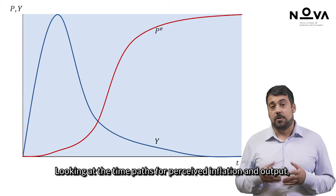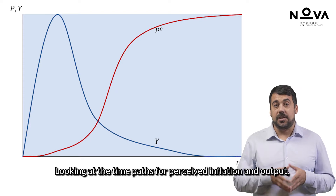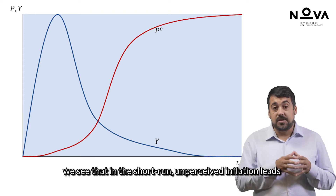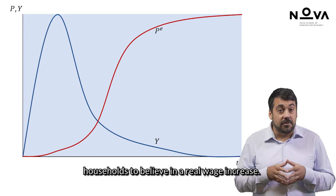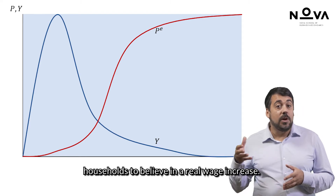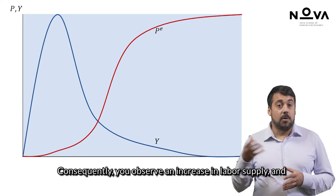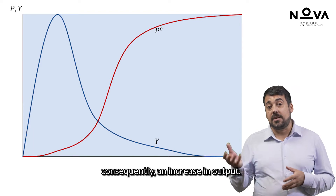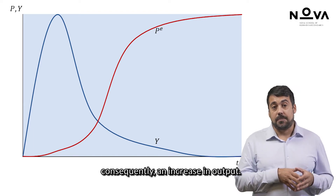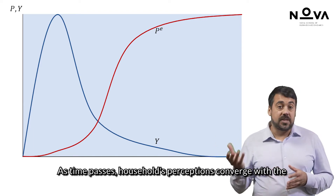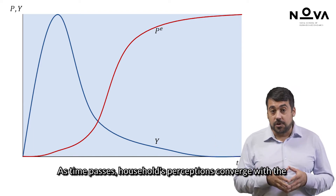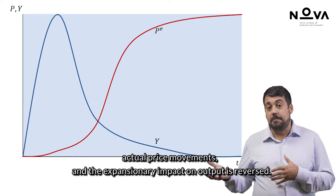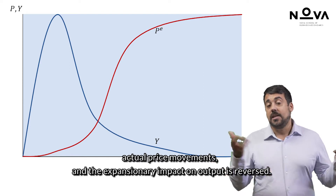Looking at the time paths for perceived inflation and output, we see that in the short run, unperceived inflation leads households to believe in a real wage increase. Consequently, you observe an increase in labour supply and consequently an increase in output. As time passes, households' perceptions converge with the actual price movements, and the expansionary impact on output is reversed.